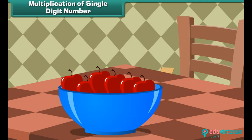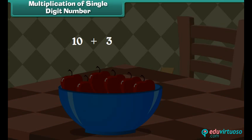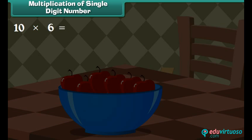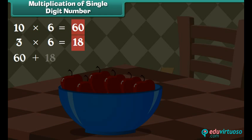We must multiply 13 and 6 to find the answer. Write 13 as 10 plus 3. Multiply 10 and 6, then multiply 3 and 6, and sum the results. 10 multiplied by 6 is equal to 60, and 3 multiplied by 6 is equal to 18. 60 plus 18 is equal to 78. So 13 bowls will contain 78 fruits.